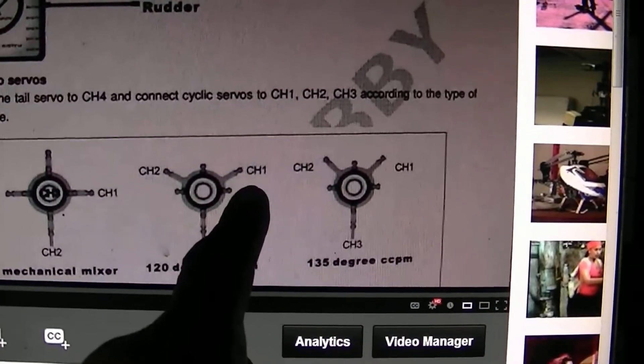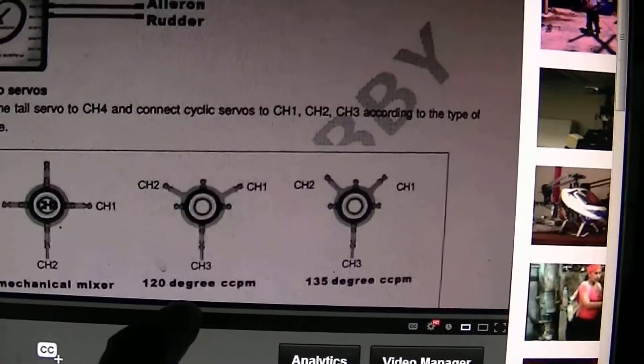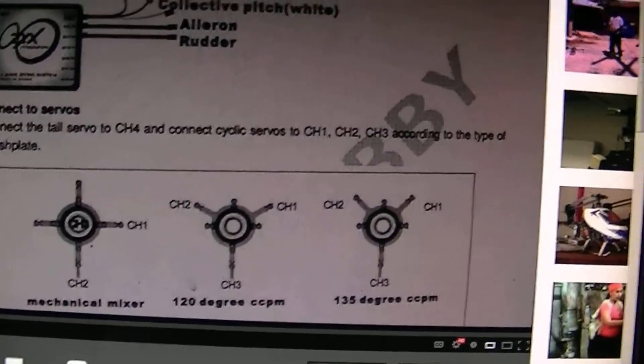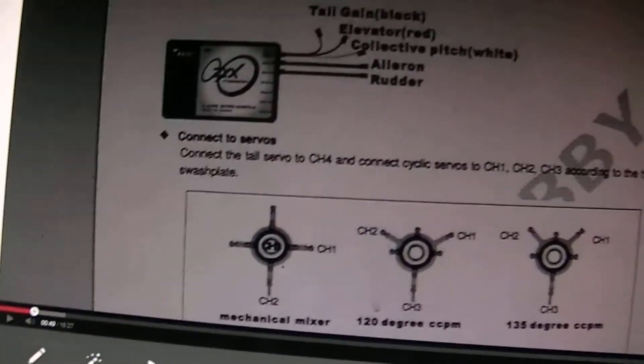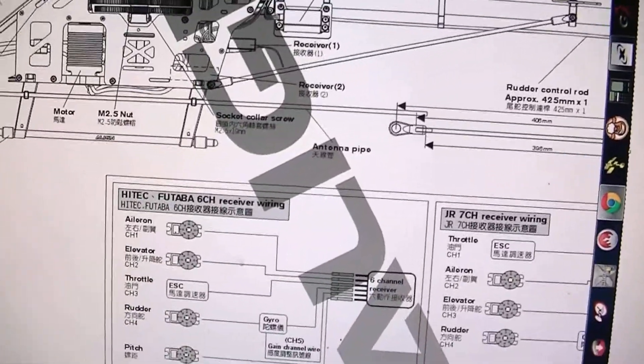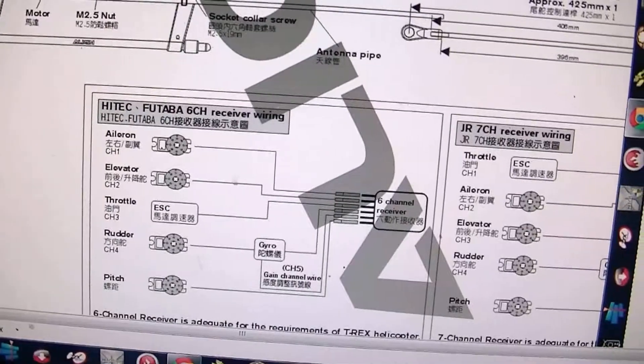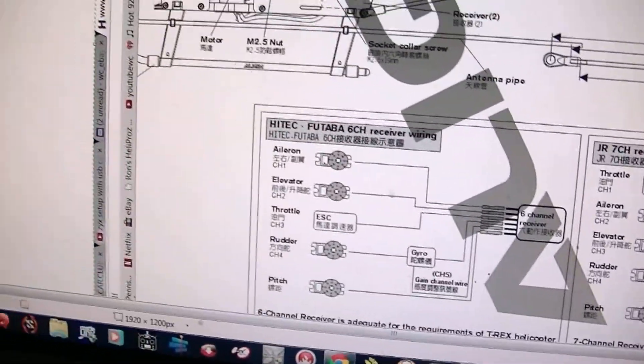Channel 1 servo is on this side, then channel 2, channel 3. So I believe channel 1 is Aileron, channel 2 is Elevator. Channel 1 is Aileron, channel 2 is Elevator, channel 6 is Pitch.